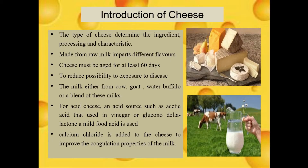My name is Khoi Zara Nabilah binti Khamisan and I want to talk about introduction of cheese. The types determine the ingredient that we use, processing and characteristic of the cheese. Cheese made from raw milk imparts different flavors to give the best product and texture characteristic to the finished cheese. Cheese made from raw milk must be aged for at least 60 days to reduce the possibility of exposure to disease because of microorganism pathogens that may be present in the milk.